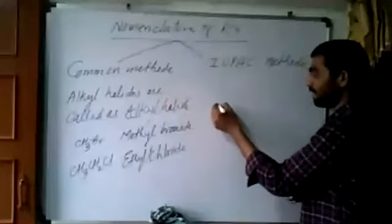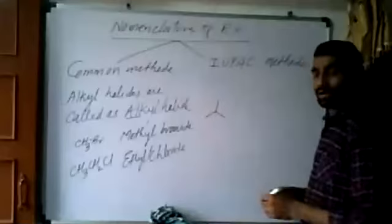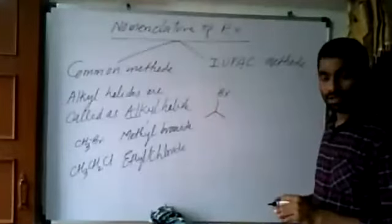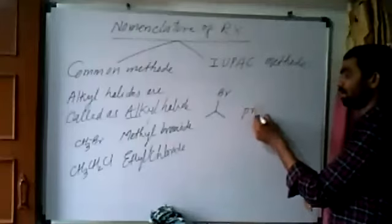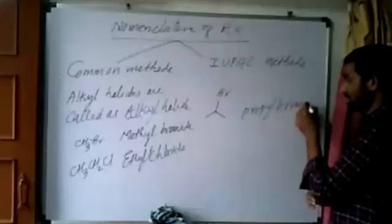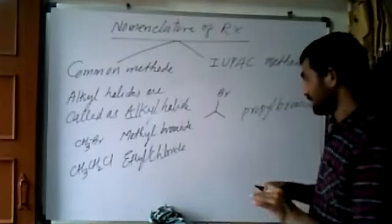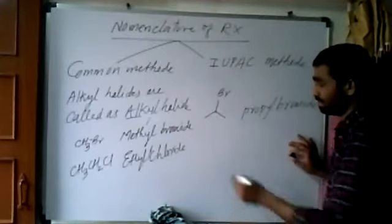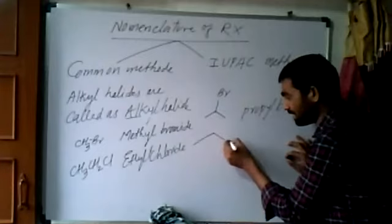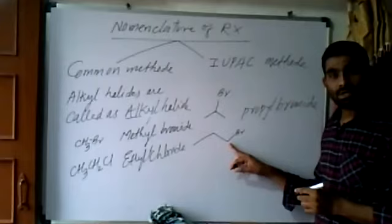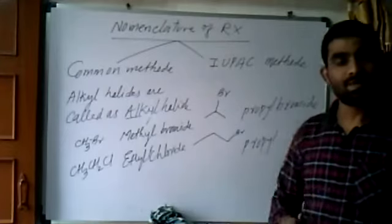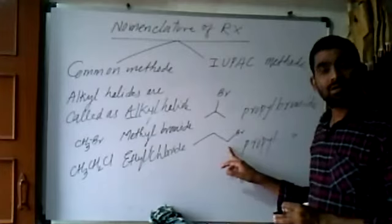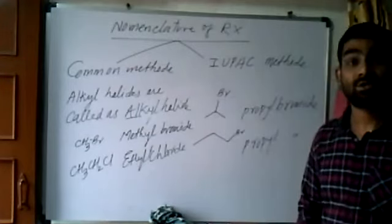If I write propane and on the middle carbon, if I write Br here, for the time being we can call this as propyl bromide. But there is one more chance of attachment for bromine on this propane, and it is here on the first carbon. So if we are writing this as propyl bromide, these two are not same. Why? This bromine is attached to first carbon. Here bromine is attached to second carbon. So they are different.